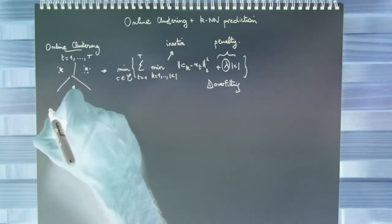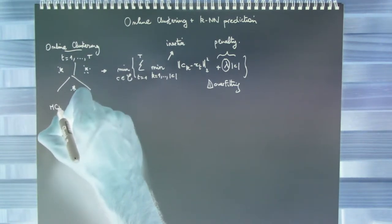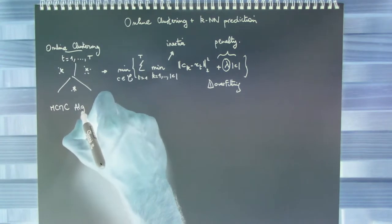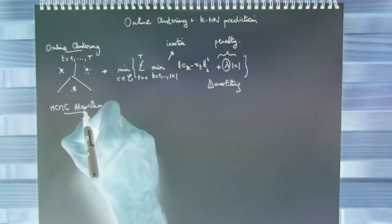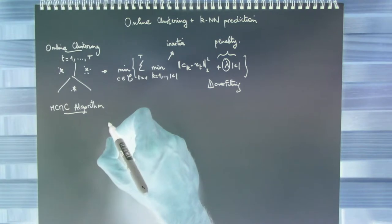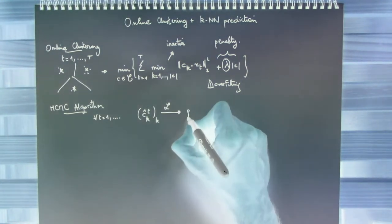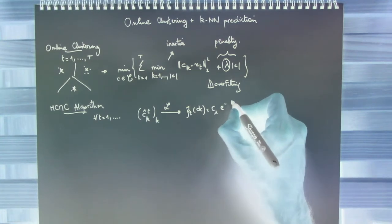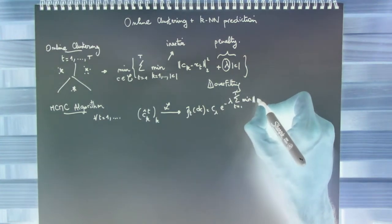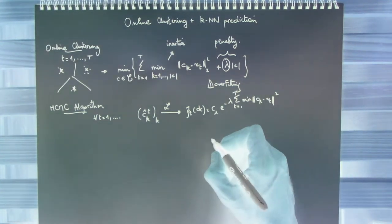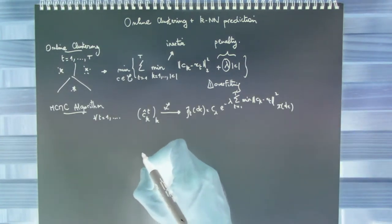To solve this optimization issue, we propose to use a sequential MCMC algorithm, Monte Carlo Markov chain. For short, we want to construct, for any round T, a Markov chain C hat Tk, which converges with Ergodic theorem, with the following Gibbs measure or quasi-posterior.